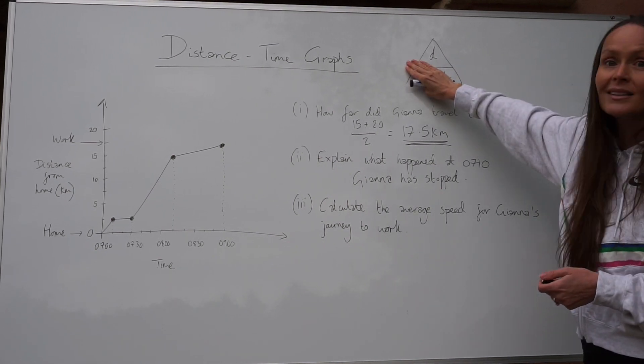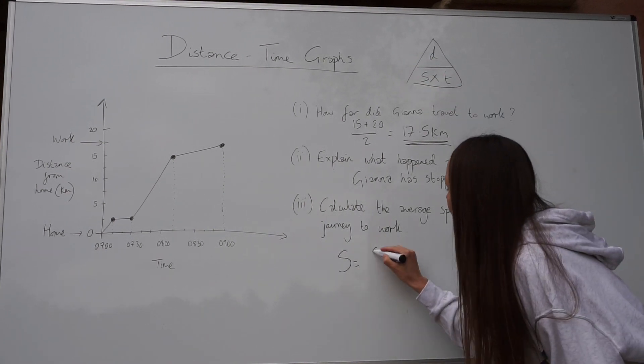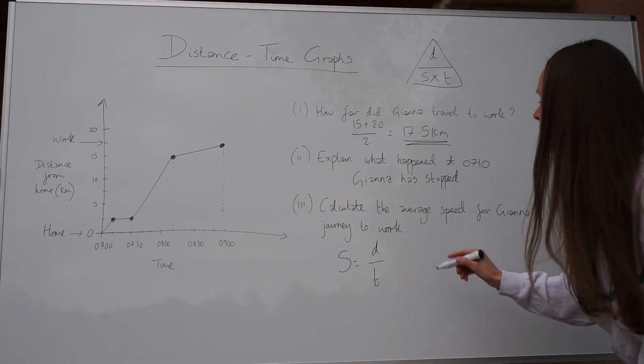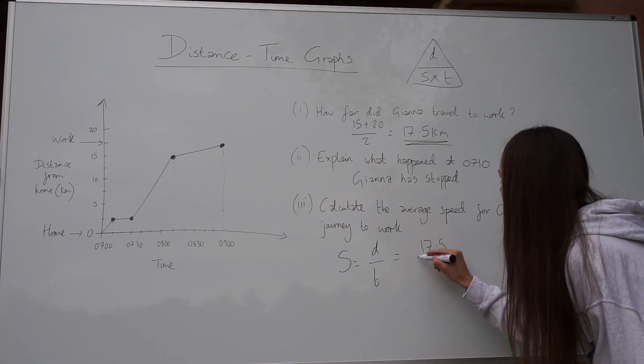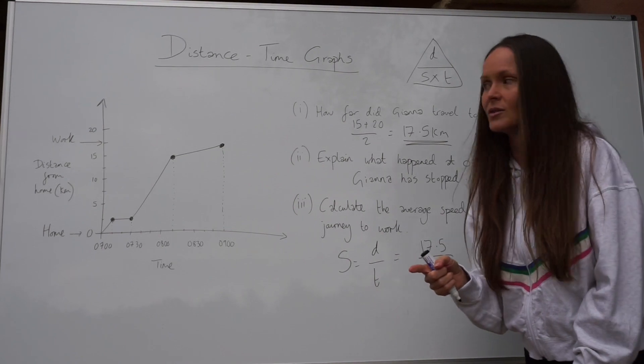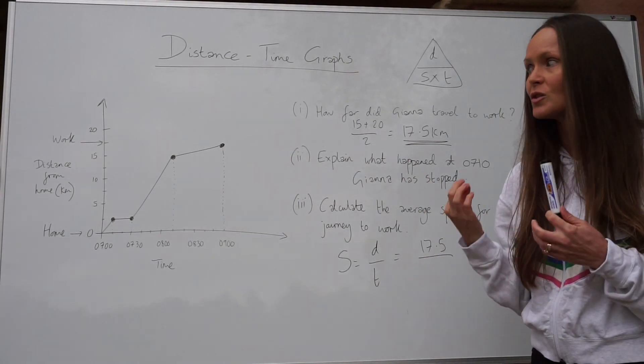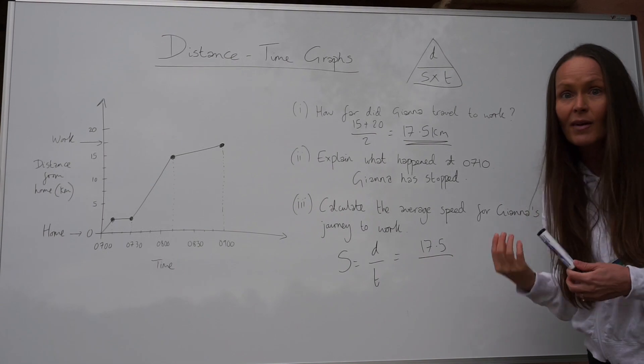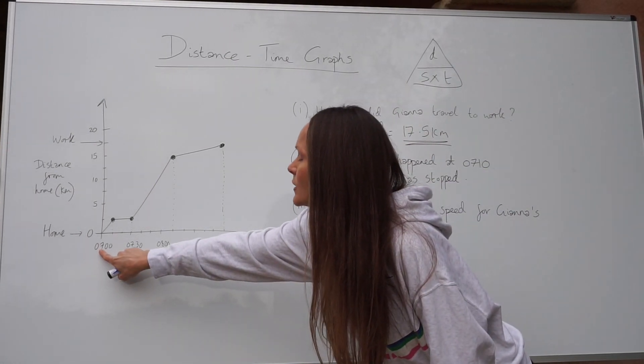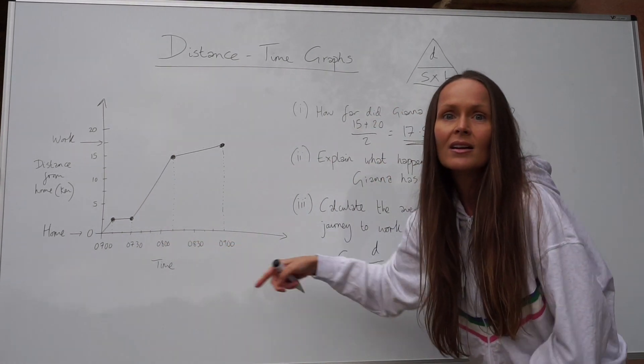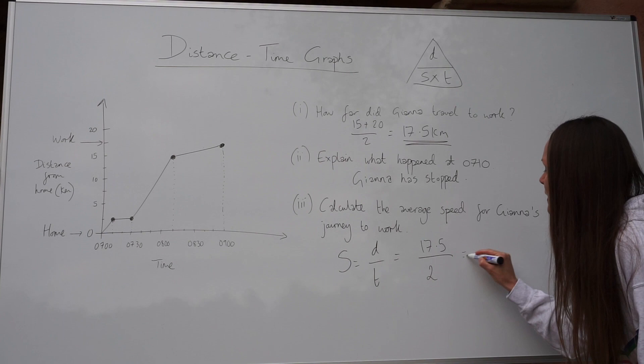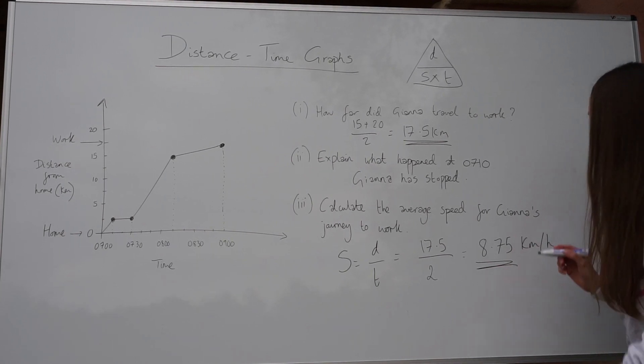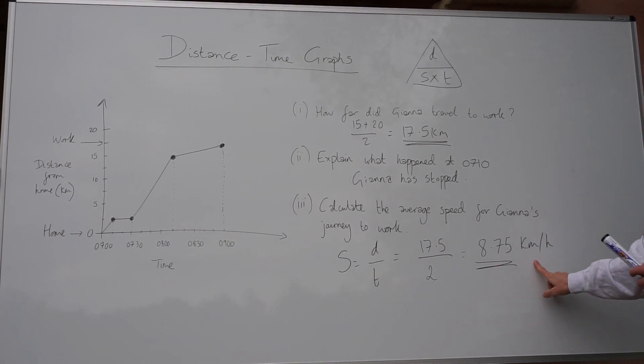So to work out speed, we have to divide the distance by the time. So distance we worked out in part one. The distance that she traveled to work was 17.5 kilometers. That's the numerator of our fraction. And the time, it has to be in hours, because in this question, it asks for the speed in kilometers per hour. This is already in kilometers. So we just need to make sure we write our time in terms of hours. It's quite a simple one because she leaves at seven in the morning, and she arrives at nine in the morning. So it takes her two hours. So you just need to divide by two. So when you calculate that, you get 8.75. And remember the units are kilometers an hour, although they're given to you in the question. So that was her average speed.